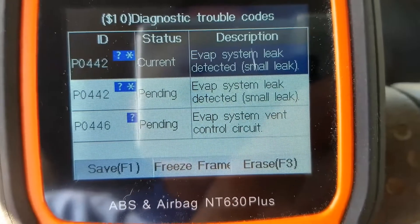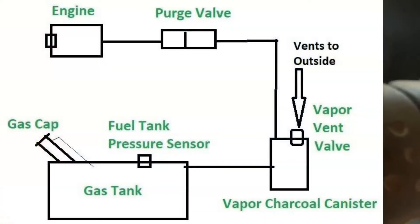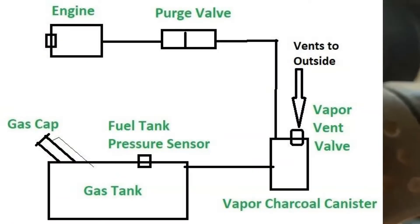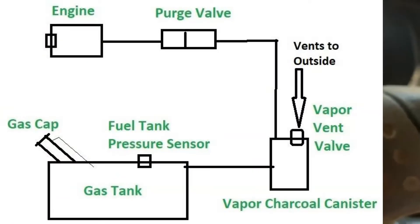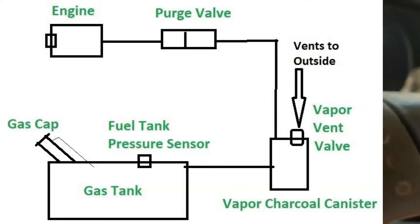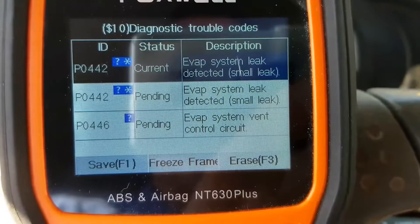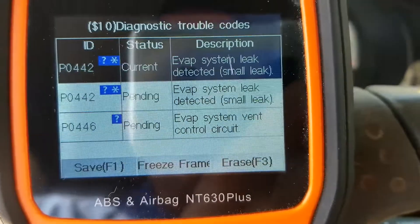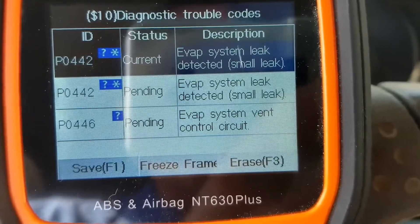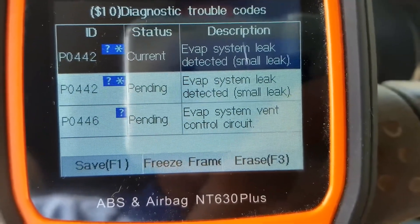Basically all the EVAP system does is take gas vapors from the gas tank and feed them back up to the engine to get burnt off. The system starts back at the gas tank and then there are some hoses going up to the engine compartment. There are going to be several components involved in this, so I'm going to go over the basics of this and what to do when you get an EVAP code.